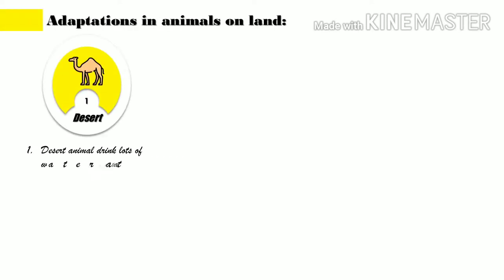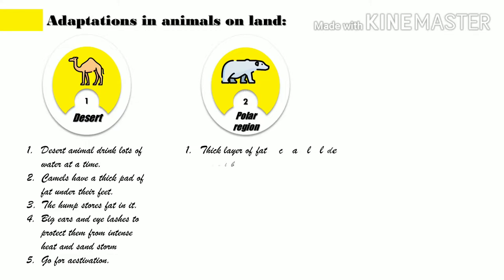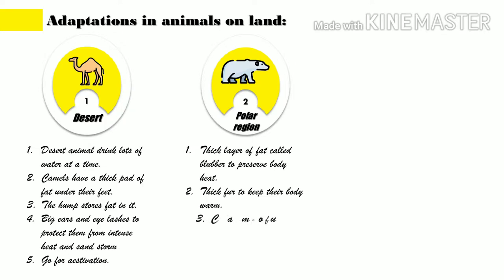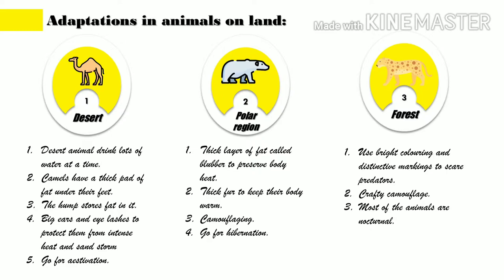Adaptation in animals on land. 1. Desert: Desert animals drink lots of water at a time. Camels have a thick pad of fat under their foot to prevent sinking. The hump stores fat. Big ears and eyelashes protect them from intense heat and sandstorm. They go for estivation. 2. Polar region: A thick layer of fat called blubber preserves body heat. Thick fur keeps them warm. Camouflaging. They go for hibernation. 3. Forest: Animals use bright coloring and distinctive markings to scare predators. Crafty camouflage. Most animals are nocturnal in nature.